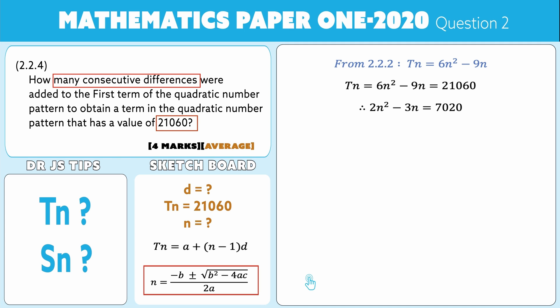Okay, so if I now apply my formula to this, I can say that n is equal to -b, and -b is 3, remember there's a double negative, plus or minus, b² which is 9 minus 4 times a which is 2 and c which is -7,020, all of that divided by 2a which is indeed 4. Now at this point you might want to use your calculator, so you get 3 ± √56,169 all of that still divided by 4. Now if you square root that answer, you get 237. So you've got 3 ± 237 all of that divided by 4.